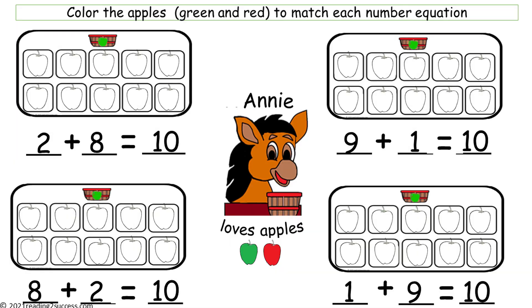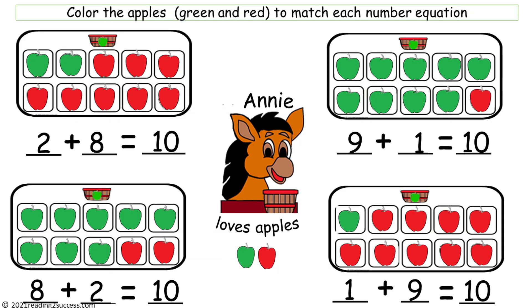Now have kids complete this practice page. Have them color the apples green and red to match each number equation. This is a completed example: 2 green apples plus 8 red apples equals 10; 9 green apples plus 1 red apple equals 10; 8 green apples plus 2 red apples equals 10; and 1 green apple plus 9 apples equals 10.